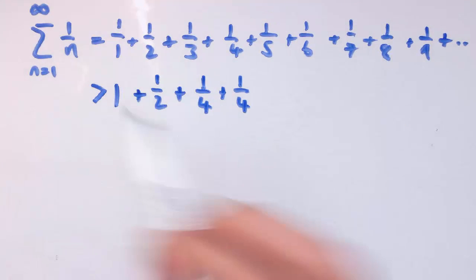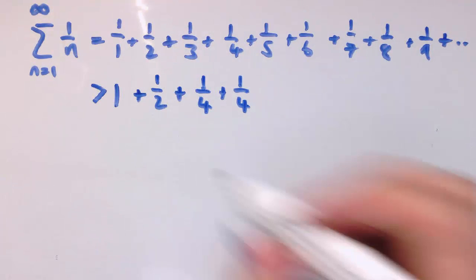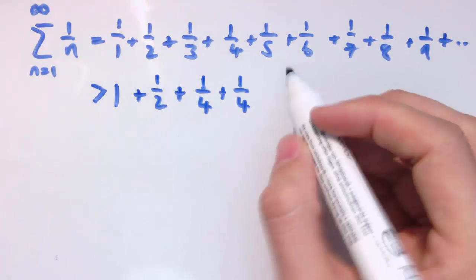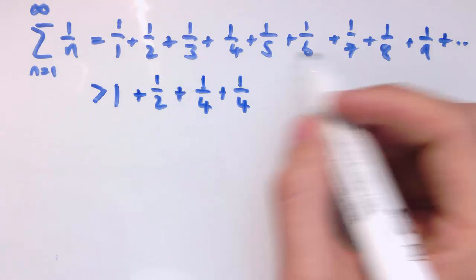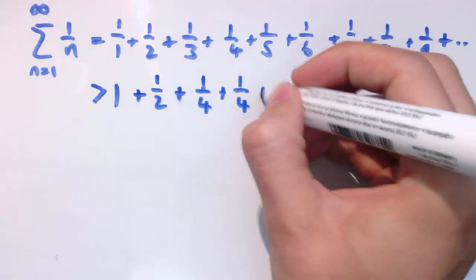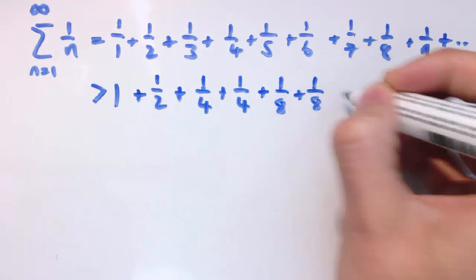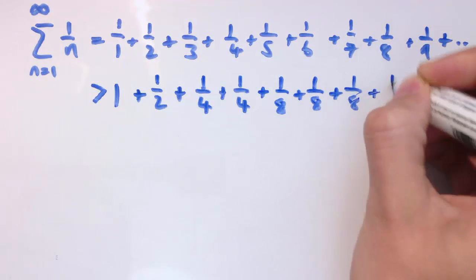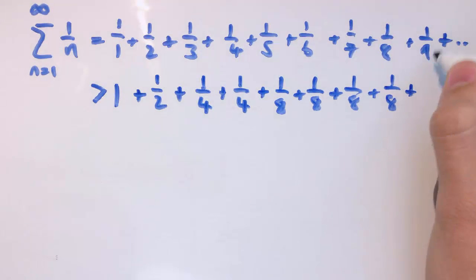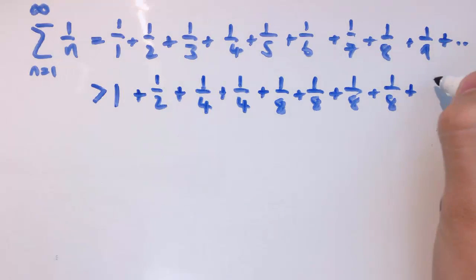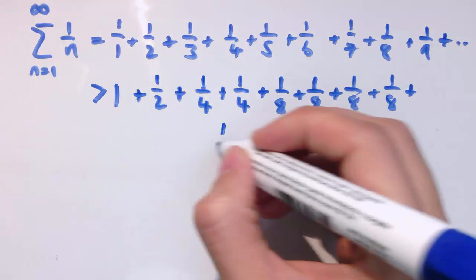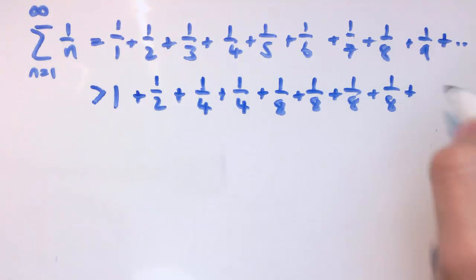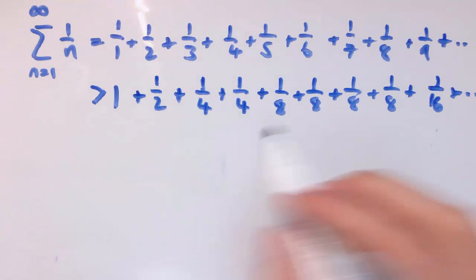So if what I've got left is still too big to have a sum, then what I started with originally must also be too big to have a sum. I'm going to do the same thing: I'll stop at an eighth as the next group. A fifth, a sixth, and a seventh are all bigger than an eighth, so let me throw away the difference and write plus an eighth, plus an eighth, plus an eighth, plus an eighth. Then for the next group, I'll go up to one sixteenth — nine, ten, eleven, all the way up to sixteen — and make those all into plus one sixteenth. After that, one thirty-second, one sixty-fourth, and so on.